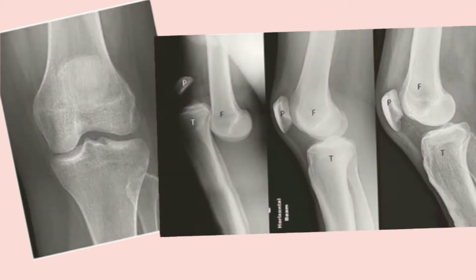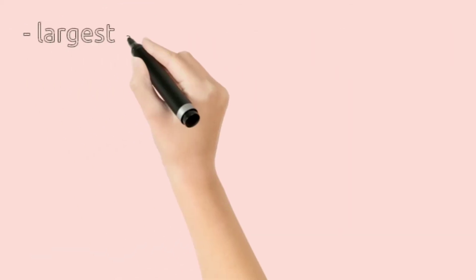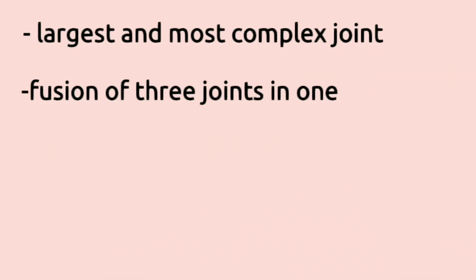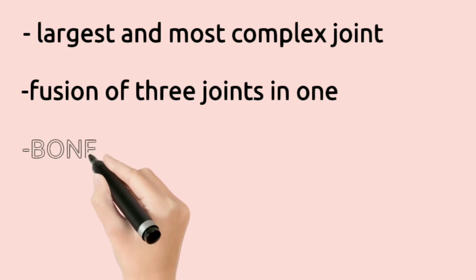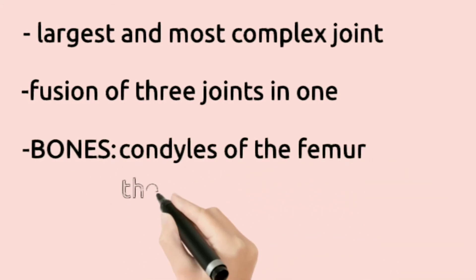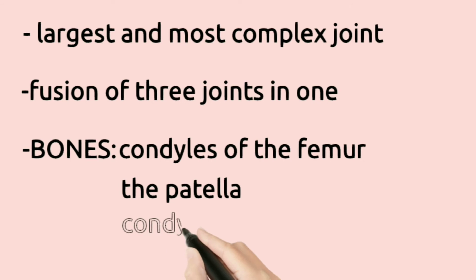Do you know the knee joint is the largest and the most complex joint? The complexity is due to the fusion of three joints in one: the lateral fibro-tibial, the medial fibro-tibial, and the femuro-patellar joints. The bones forming this knee joint are the condyles of the femur, the patella, and the condyles of the tibia.